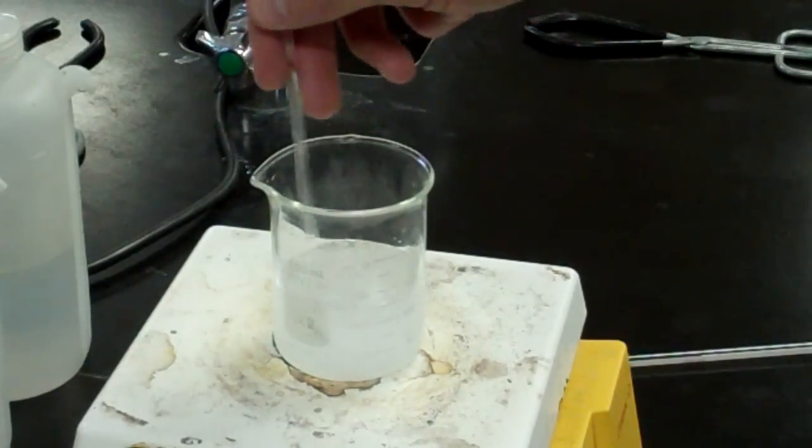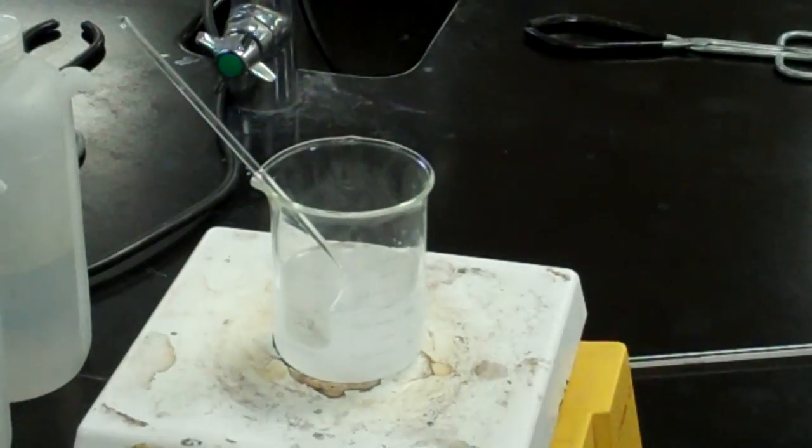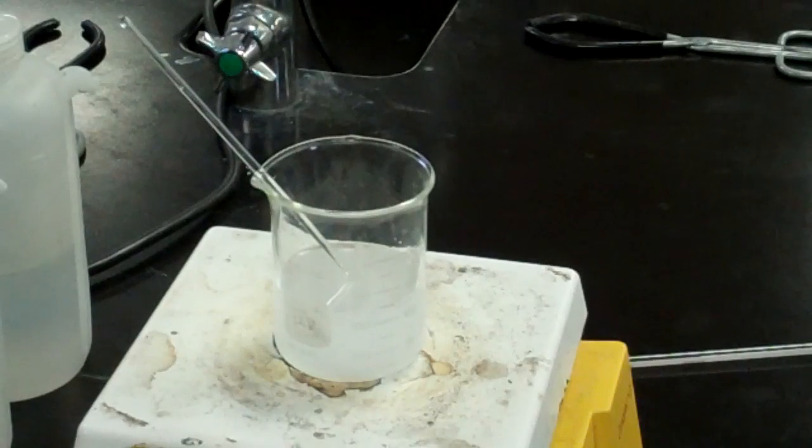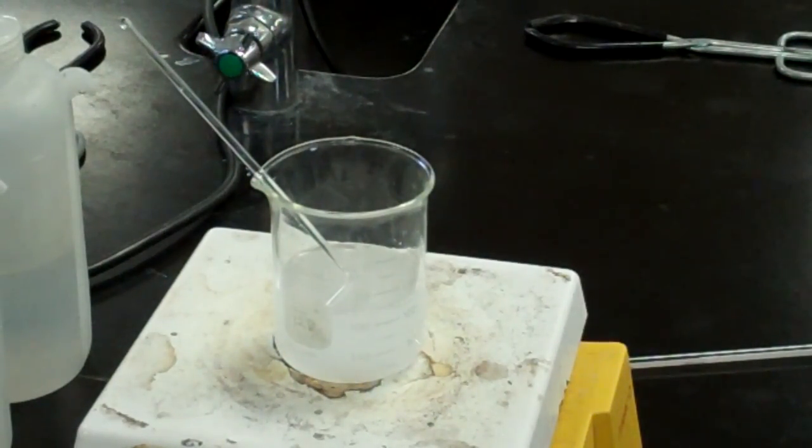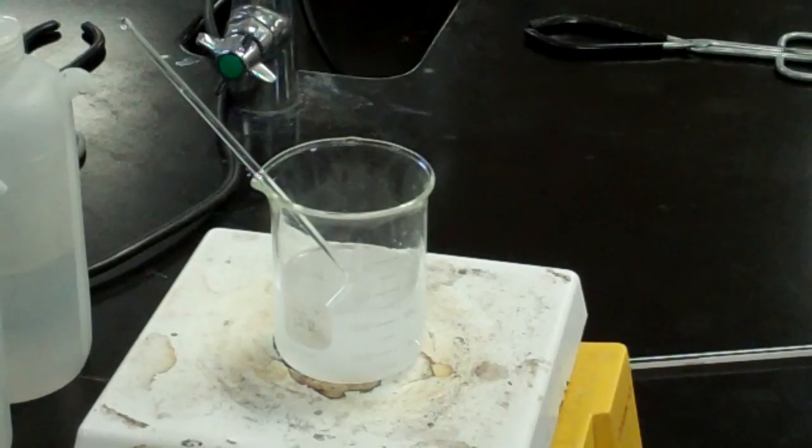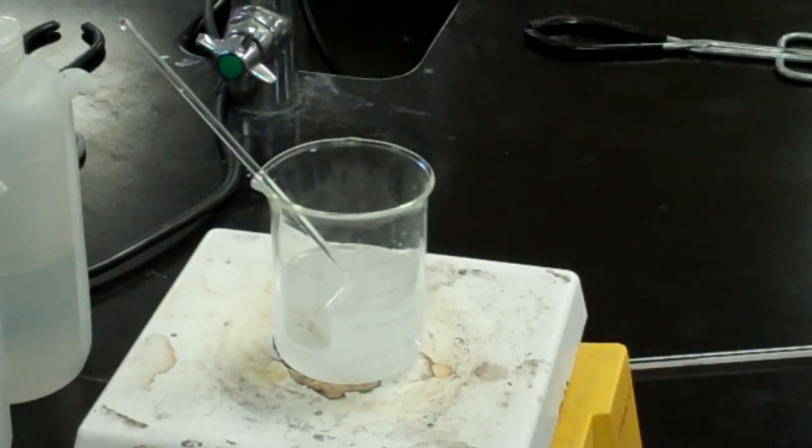Now, according to what we talked about in class, the boiling point should elevate, it should change, it should go higher. And for water it turns out that for each molal solution the boiling point will raise about 0.52 degrees. So one of the jobs today will be to find the molality of the solution.